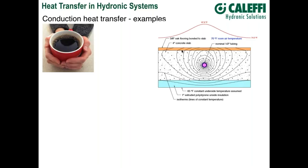Within the slab you can see contour lines called isotherms — lines or curves representing a given temperature. Every point along an isotherm has the same temperature. An isotherm gives you an indication of how heat moves by conduction from the tube out through these different materials, which have widely varying values of thermal conductivity, so you see changes where the isotherm meets the wood floor.